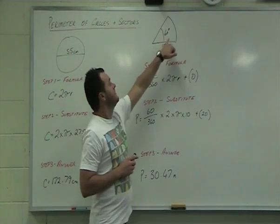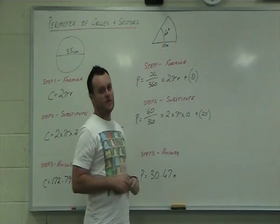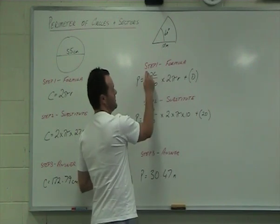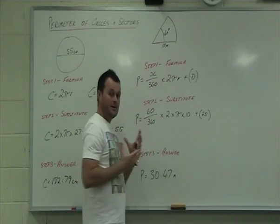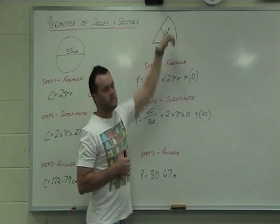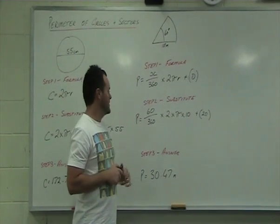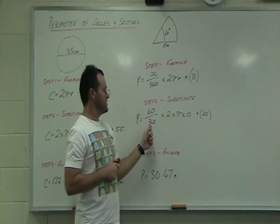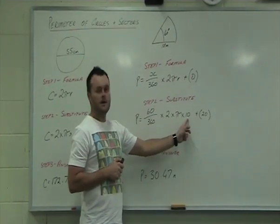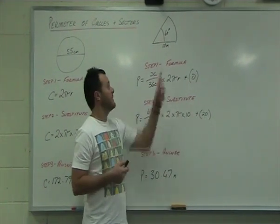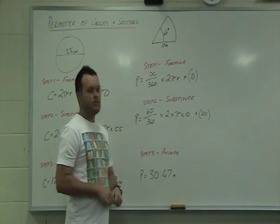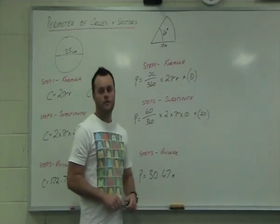For the sector: angle of 60 degrees, radius of 10 metres. Step one: formula — perimeter equals angle over 360, times 2πr, plus the diameter. Remember there's a plus for those two straight sides. Step two: substitute in — 60 over 360, times 2 times pi times 10, plus 20 (the diameter, since 10 plus 10 gives 20). Step three: the answer is 30.47 metres.